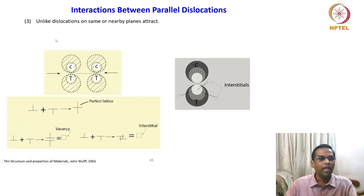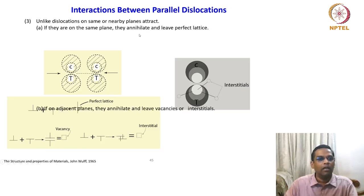What is the next one? Unlike dislocations on the same or nearby planes attract. This is quite obvious. This schematic should be corrected because unlike means that T should be up and C should be down. There is a correction here. This should compare with this symbolism here. This is positive dislocation; this is negative dislocation. It should be rotated 180 degrees. If they combine together, then it forms a perfect lattice.